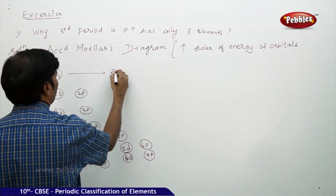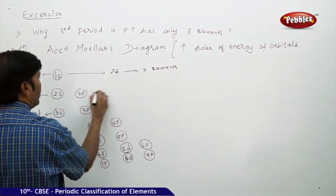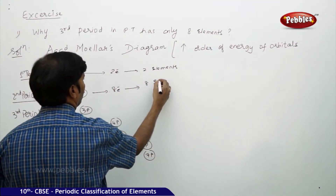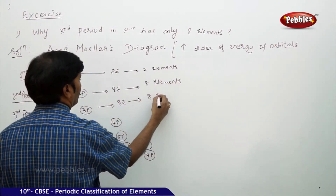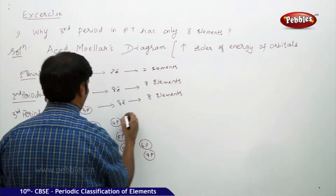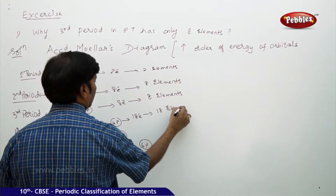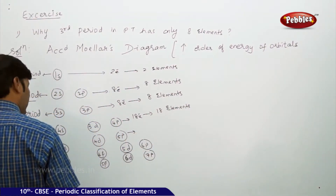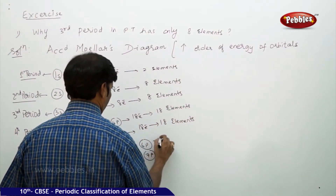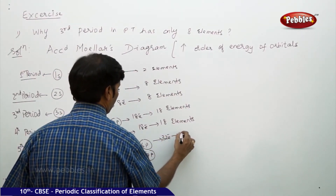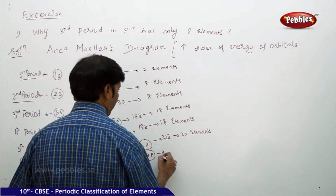In the first period we have two electrons, which corresponds to two elements. The second period corresponds to eight electrons with eight elements. The third period again has eight electrons with eight elements. The fourth period corresponds to 18 electrons with 18 elements. The fifth period also corresponds to 18 electrons with 18 elements, and the sixth period has 32 electrons with 32 elements.